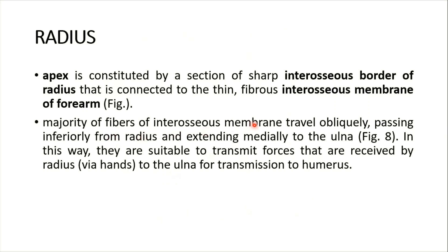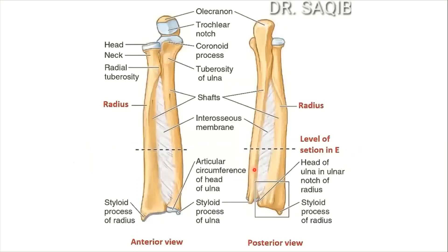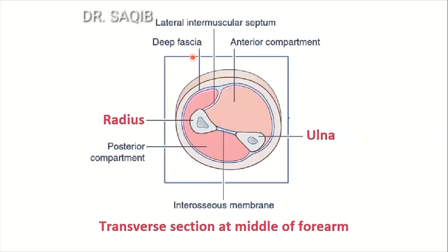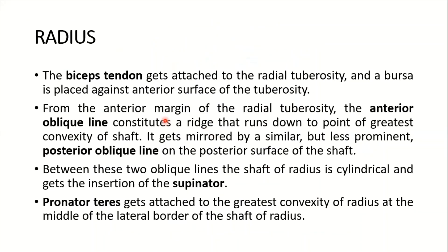The majority of fibers of the interosseous membrane travel obliquely, passing inferiorly from the radius and extending medially to the ulna. In this way they are suited to transmit forces received by the radius via the hand to the ulna, for transmission to the humerus — this is the force transmission role of the interosseous membrane. Here you can see the anterior compartment and posterior compartment of the forearm, the interosseous borders of the radius and ulna, and the interosseous membrane.